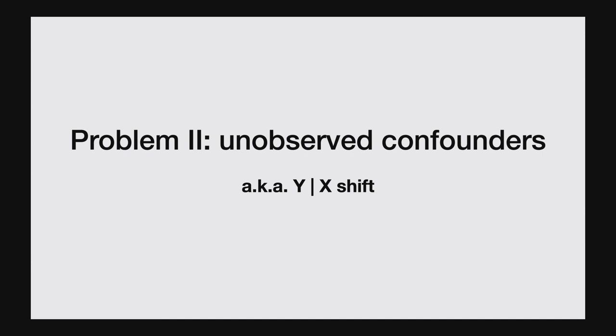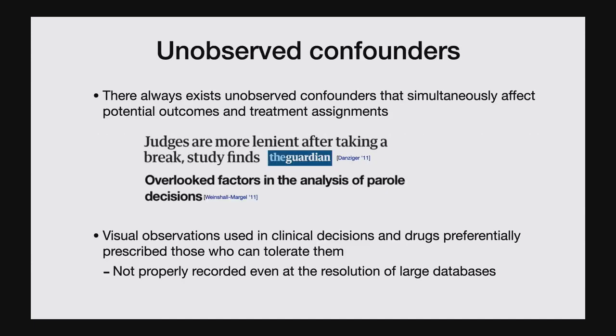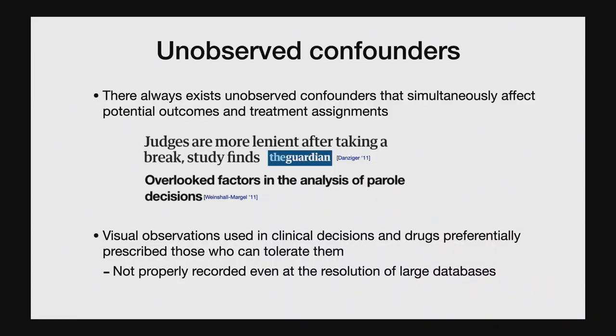The covariate-shift problem affects both observational studies and randomized trials. For observational studies, the no unobserved confounding condition is often outright false. For example, a study from Columbia looked at Israeli courts and found that judges tend to be more lenient right after taking a break. But another group of authors argued the original analysis may have overlooked variables: in the Israeli judicial system, defendants without good representation tend to go last in any session, which might explain the observed effects.